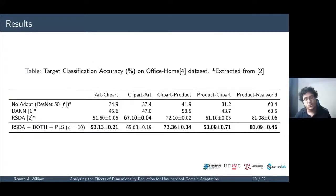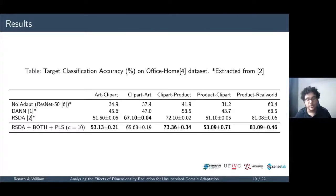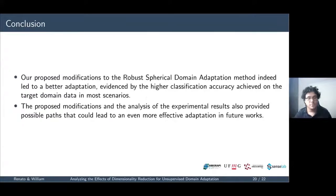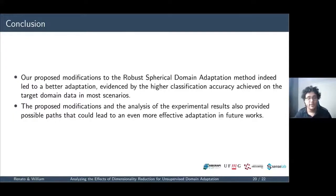For the Office Home dataset, which is much more challenging due to the number of images and level of divergence between domains, even the original methods do not achieve high classification accuracy on target data. Nevertheless, our proposed modifications also led to improvement in most cases. In conclusion, our modifications to the RCDA method led to better results on target domain data in most scenarios, and our results and conclusions can guide future works on domain adaptation, providing possible paths for even more robust adaptation.